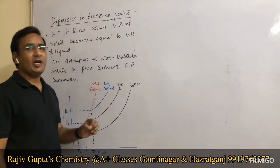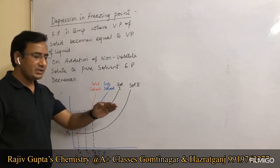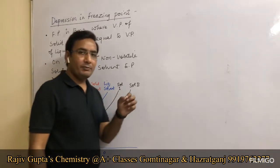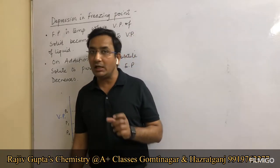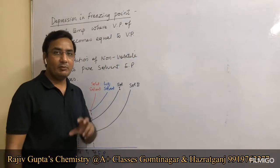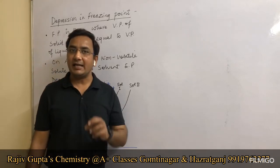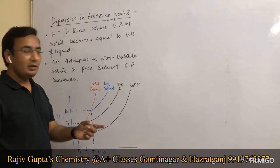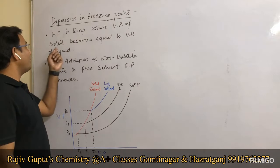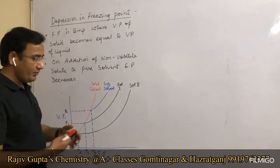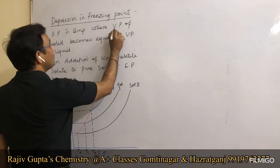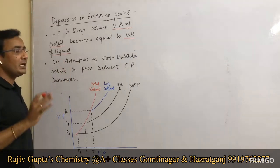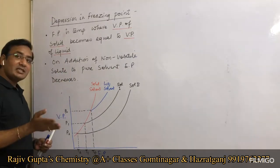Freezing point is the temperature at which a liquid starts to change to solid — the temperature at which liquid and solid forms can co-exist. In terms of vapor pressure, freezing point is the temperature where the vapor pressure of the solid becomes equal to the vapor pressure of the liquid.